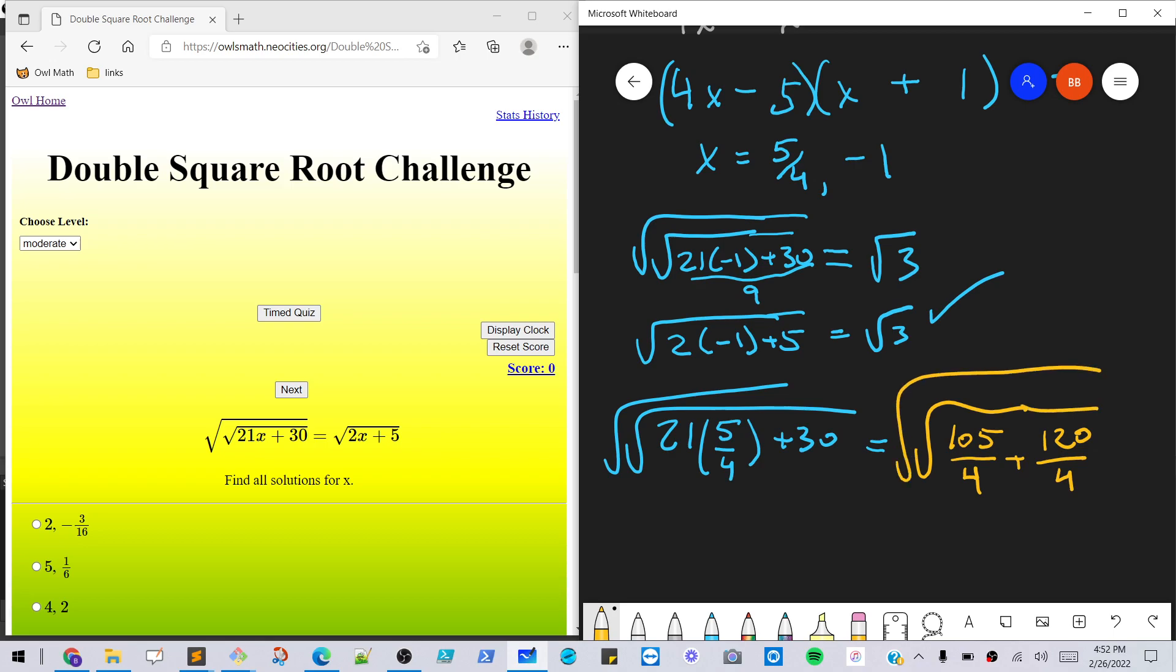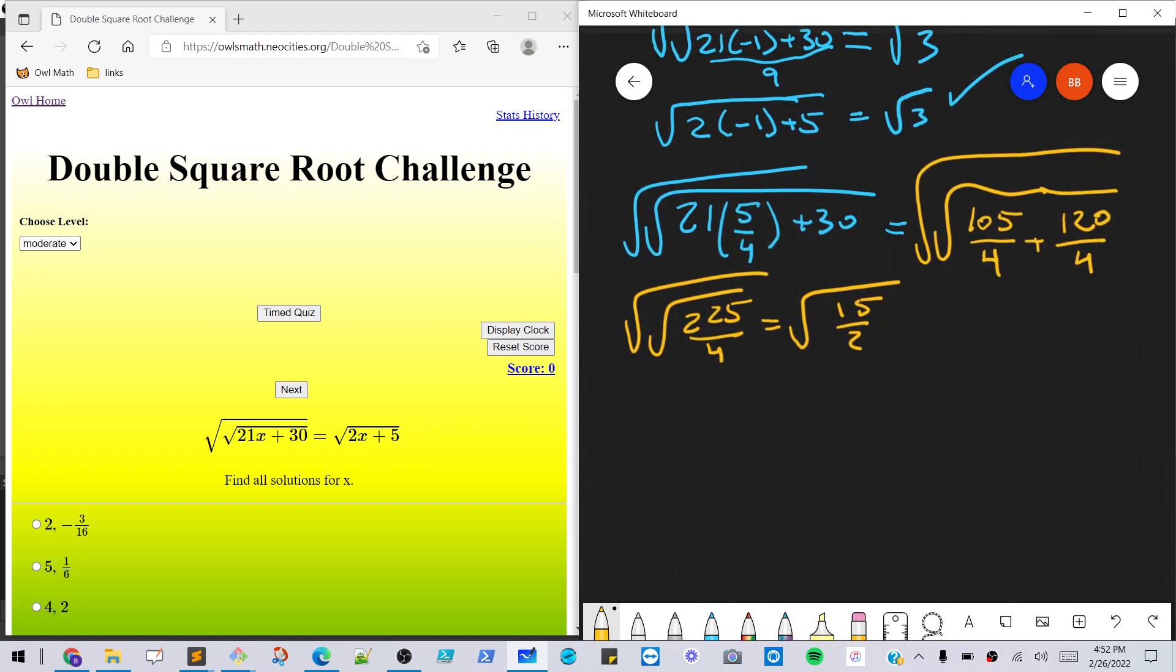Okay. See, if we combine those, we're gonna have 225 over 4, which is gonna be the square root of 15 halves. And I think we'll just leave it as 15 halves, because we can't simplify it anymore. And let's look at the other side of the equation.